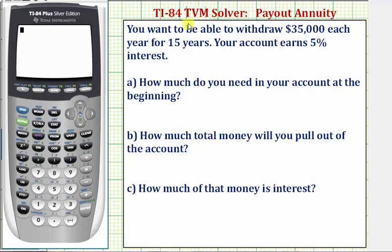Welcome to an example on how to use the TI-84 TVM solver in order to determine the present value of a payout annuity. In this example, you want to be able to withdraw $35,000 each year for 15 years, and your account earns 5% interest. How much do you need in your account at the beginning? How much total money will you pull out of the account? And finally, how much of that money is interest?